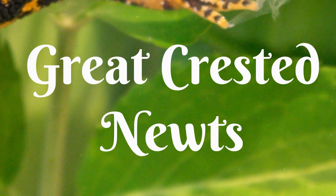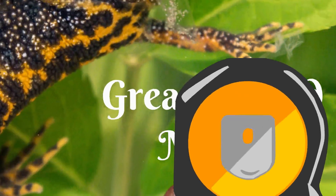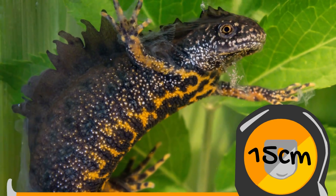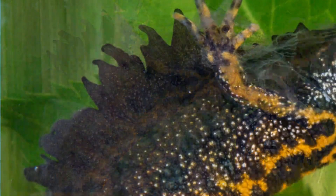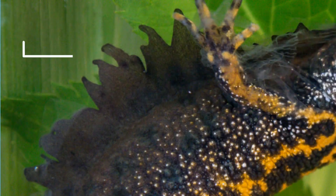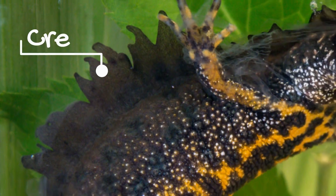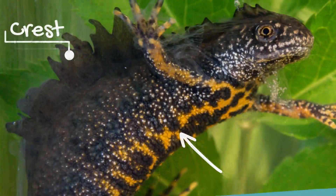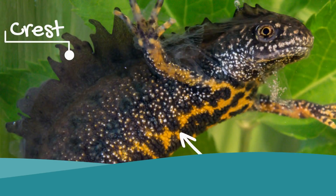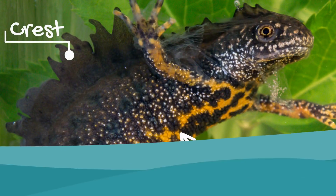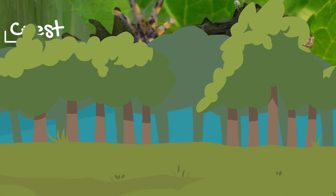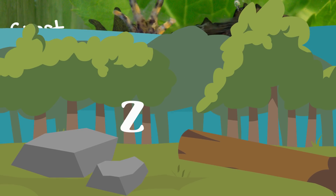Great crested newts are brown or black amphibians around 15 centimetres long, with a large crest on their back and a bright orange belly with black spots. They are potentially found in any body of water or surrounding woodland and hibernate under logs and stones.